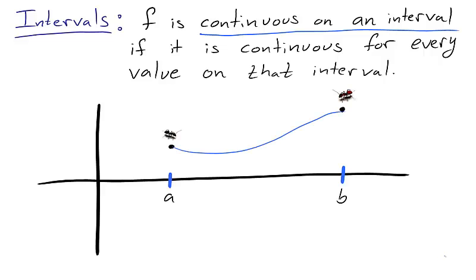Visually, a function is continuous on the interval between a and b if the curve is unbroken. That is, if an ant crawled along it dragging a pen behind itself, it would trace out the entire graph of the interval.